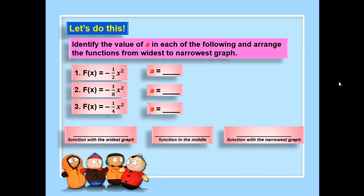How about this one? Number 1 is the quadratic function defined by negative 1.5x squared. Number 2 is the quadratic function defined by negative 1.8x squared. Number 3 is the quadratic function defined by negative one-fourth x squared. Identify the values of a and arrange the graphs from widest to narrowest.